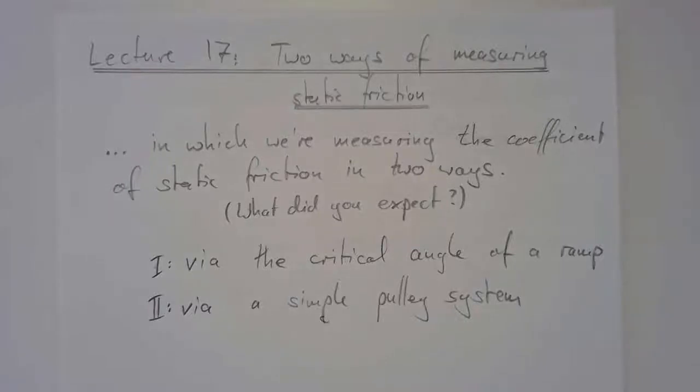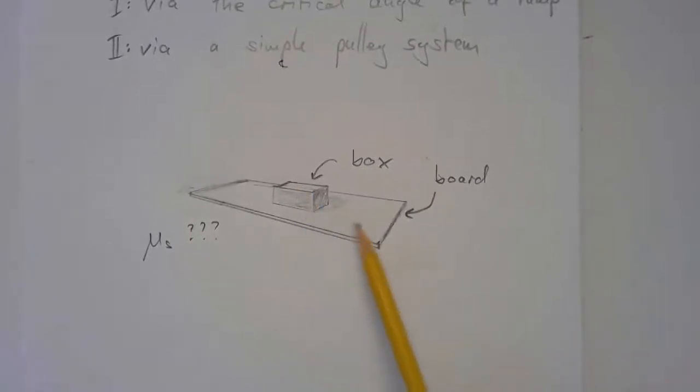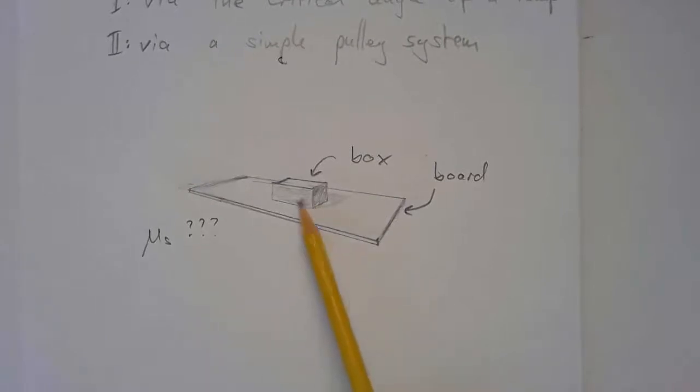This is lecture 17, which really is a follow-up of the previous lecture. So we're not going to cover anything fundamentally new here. We're just going to apply what we learned in the last lecture to two more examples. And the central idea here is, well, we want to measure the coefficient of static friction. And in our case, let's imagine this kind of scenario, we have a box and some kind of wooden board. We want to ask, well, what is the coefficient of static friction between this little box and the board underneath it?